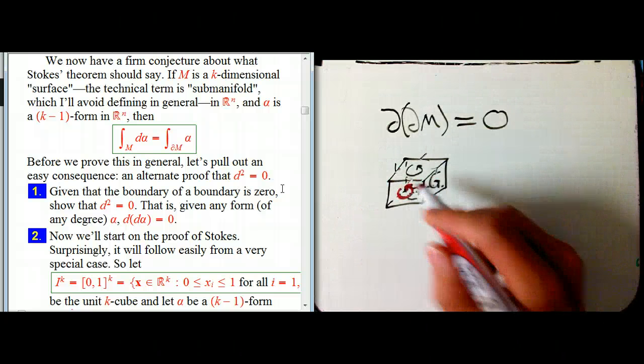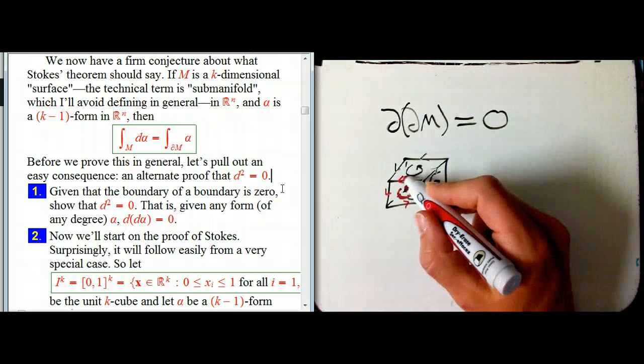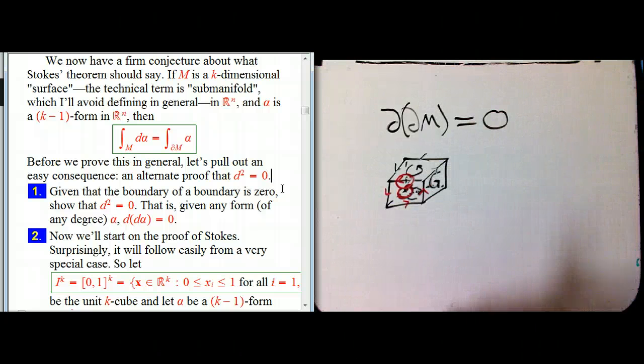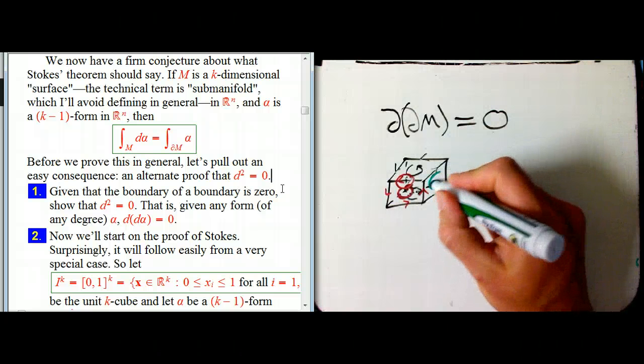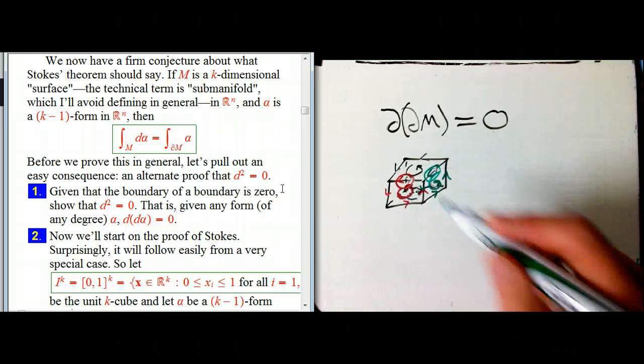And that swirl is supposed to indicate that its boundary orientation looks like that. Whereas this front face, I'll put that in red, it has a boundary orientation like this. Notice these guys cancel in pairs. This one, put that in green, that green swirl goes like this. And these guys cancel in pairs as well.